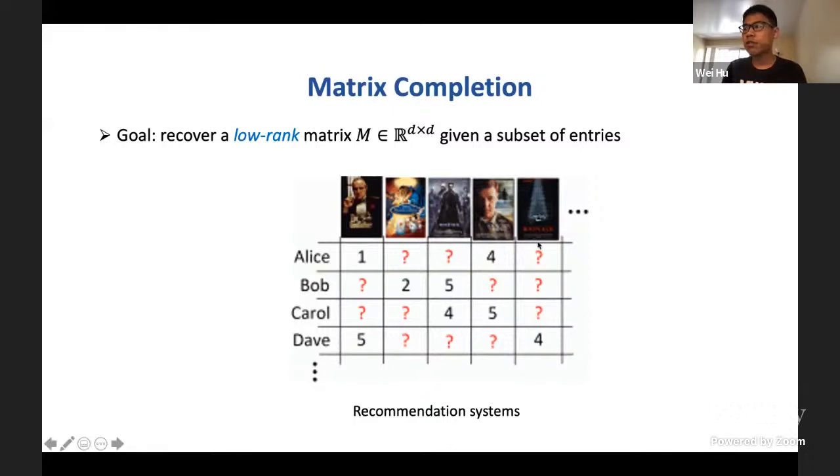The goal of matrix completion is to recover a low-rank matrix given only a subset of its entries. This is a well-studied problem in machine learning and statistics. The typical application is in recommendation systems, think about predicting user ratings but given only a subset of the ratings. Today, for simplicity, we will just assume that this ground-truth matrix, which I call M, is a square matrix. So it's a D by D matrix, and it has low rank.